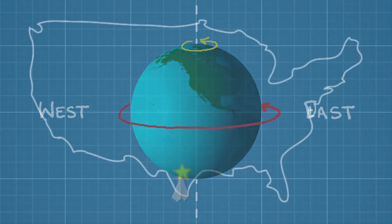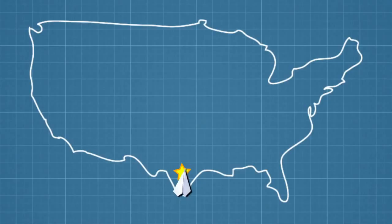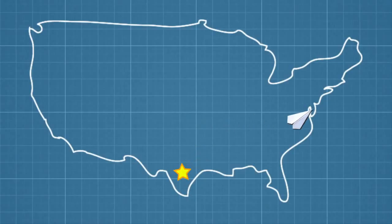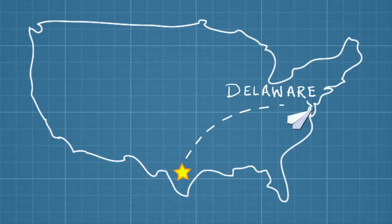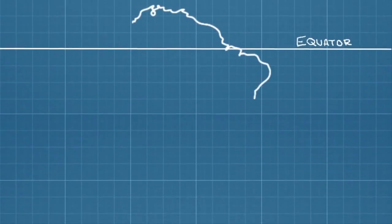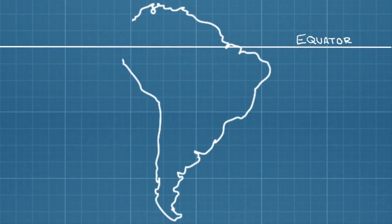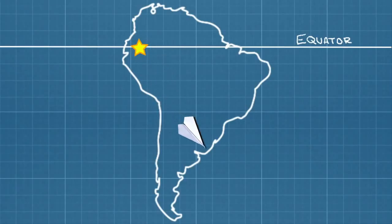So if you threw your paper airplane in a straight line toward the north, it would land somewhere to the right of Nebraska, maybe in Delaware. From your point of view in Texas, the plane would have taken a curved path to the right. The opposite would happen in the southern hemisphere — an object traveling from the equator to the south would get deflected to the left.